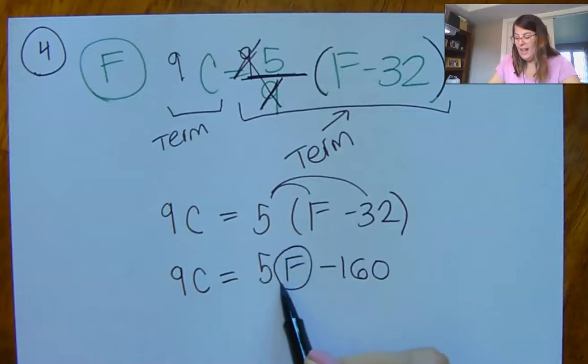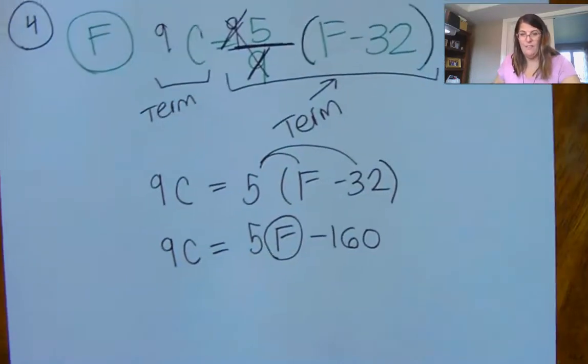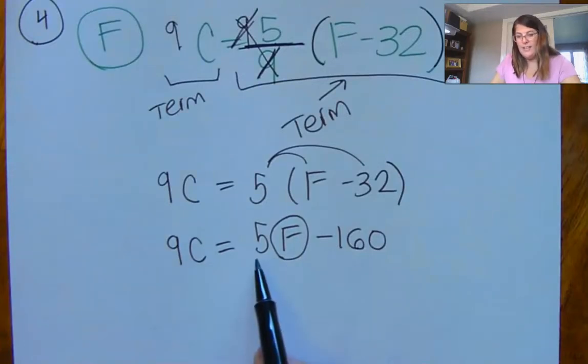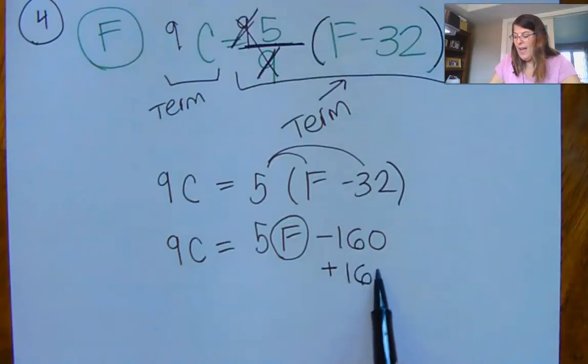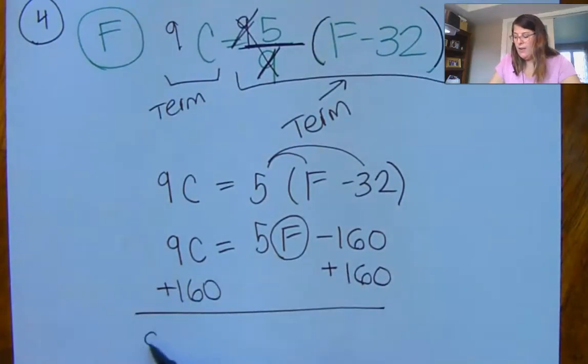Remember, my goal is to get F alone. I'm trying to solve for F. So this is subtracted. This is multiplied. First, I get rid of subtraction by adding 160 to both sides. So I have 9C plus 160 is equal to 5F.